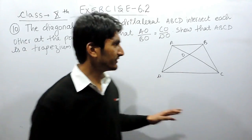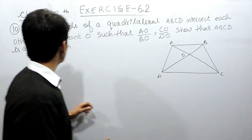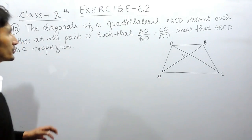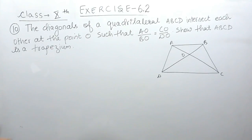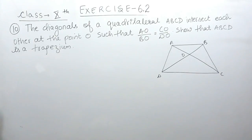Hello everyone. In this video we are going to solve question number 10 of exercise 6.2. The question says the diagonals of a quadrilateral ABCD intersect each other at the point O such that the ratio between AO and BO is equal to the ratio between CO and DO. You have to show that ABCD is a trapezium.